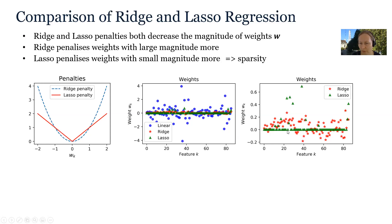We can visualize the sparsity of the LASSO model in this plot comparing the weights of the ridge model and LASSO model. The ridge model, plotted with red stars, shows that most weights are non-zero. For the LASSO model, most weights are zero and only a few are non-zero, and some of those are much larger than the ridge weights — demonstrating that the LASSO solution is sparse.